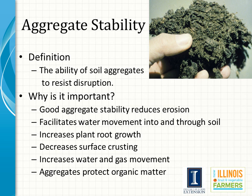Soil quality is related to soil structure, and one tool to evaluate the quality of that structure is called aggregate stability — a method used to evaluate whether or not those aggregates are strong enough to resist disruption. That disruption can come from a water drop hitting it during a rainstorm, or from tillage. The stronger the structure, the less erosion we will have, the better infiltration of water, less crusting of the soil surface, and more porosity will allow more root growth. So aggregate stability is an important tool to evaluate soil structure.